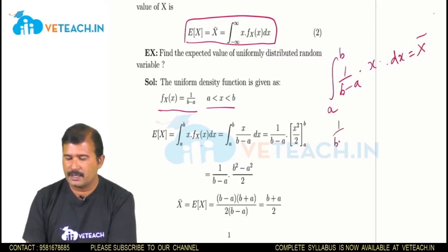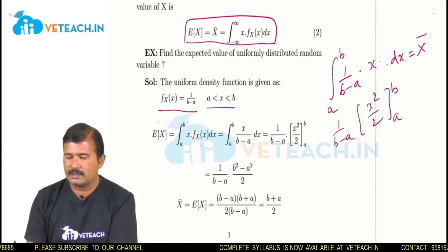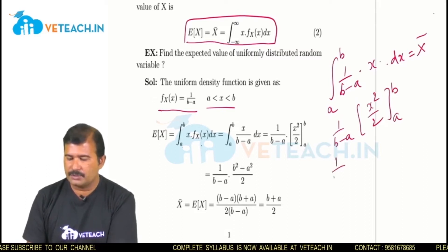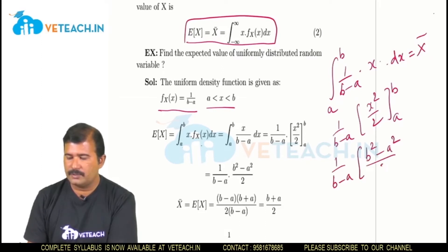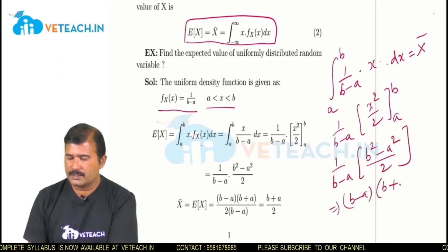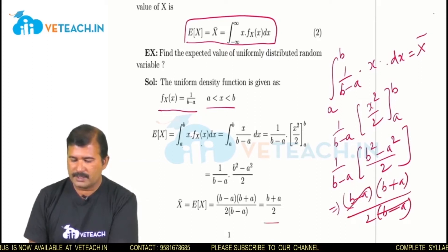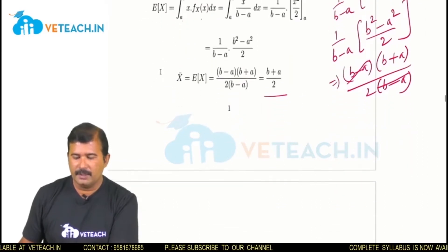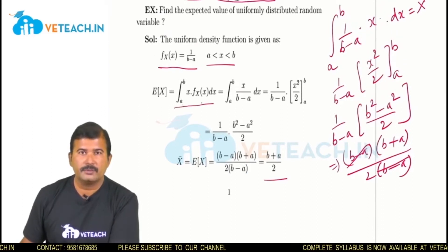Substituting the upper and lower limits gives (b²−a²)/2. This simplifies to (b−a)(b+a) / (2(b−a)), which equals (a+b)/2. So the average value of the uniformly distributed random variable is (a+b)/2. Since it is a continuous random variable, we use the density function to find the mean value.